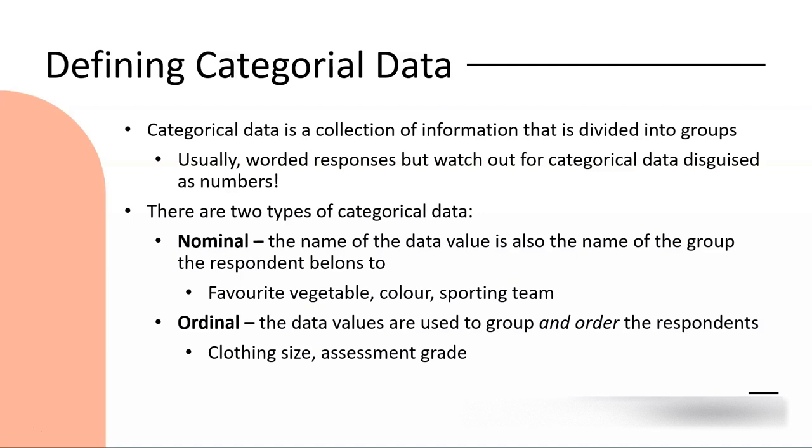Firstly, defining categorical data. Categorical data is a collection of information that's divided into groups. It's what we typically think of as survey responses, where we're asking for people to give us worded responses to a set of questions. We need to be really careful though of responses that are numbers that are actually assigned to a group or a category, like star ratings.